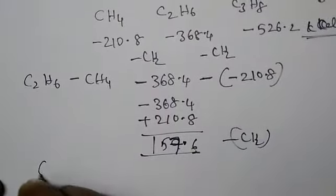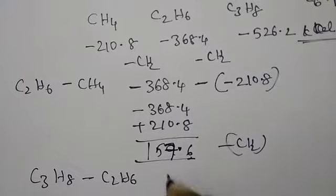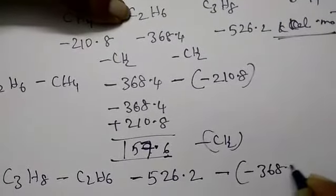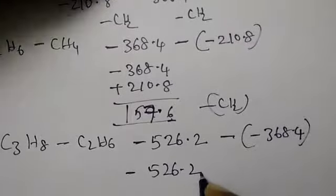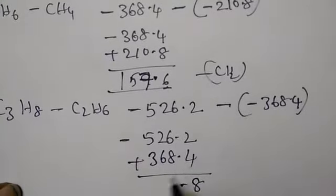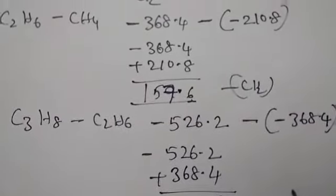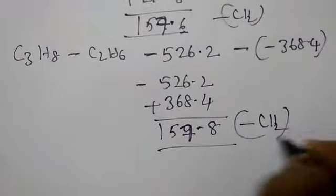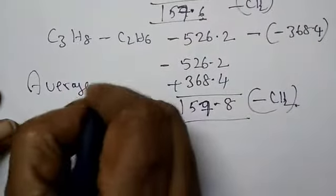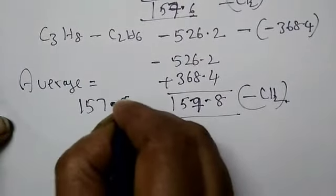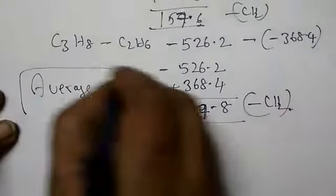Next, let us go to this difference. What is the difference in C3H8 minus C2H6. Same thing let us calculate. 526.2 minus of minus 368.4. Now write minus 526.2 minus of minus plus 368.4. So, here you have 8 and then 7, 9 you will have and then here you are having 7 and here 5 and 1. Check it. Yes. So, now here you are having another CH2. Now, I have to go for average of both. This is 157.6, 157.8. So, what is the average is? Simply 157.7. This is your average of CH2 value.